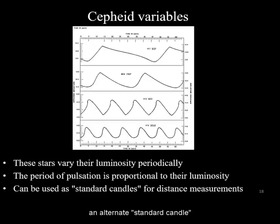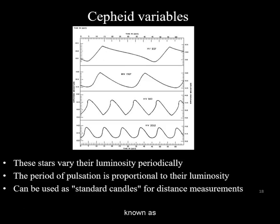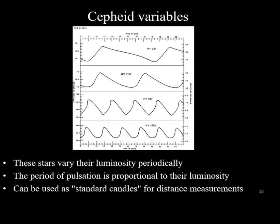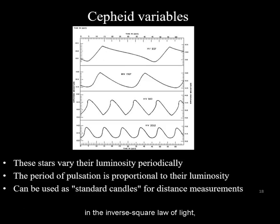There is an alternate standard candle at this step. A special type of star known as a Cepheid variable varies its luminosity with a predictable period. The period of pulsation is directly proportional to its absolute luminosity. Measuring this variability can then be used as a standard candle in the inverse square law of light to establish distance.